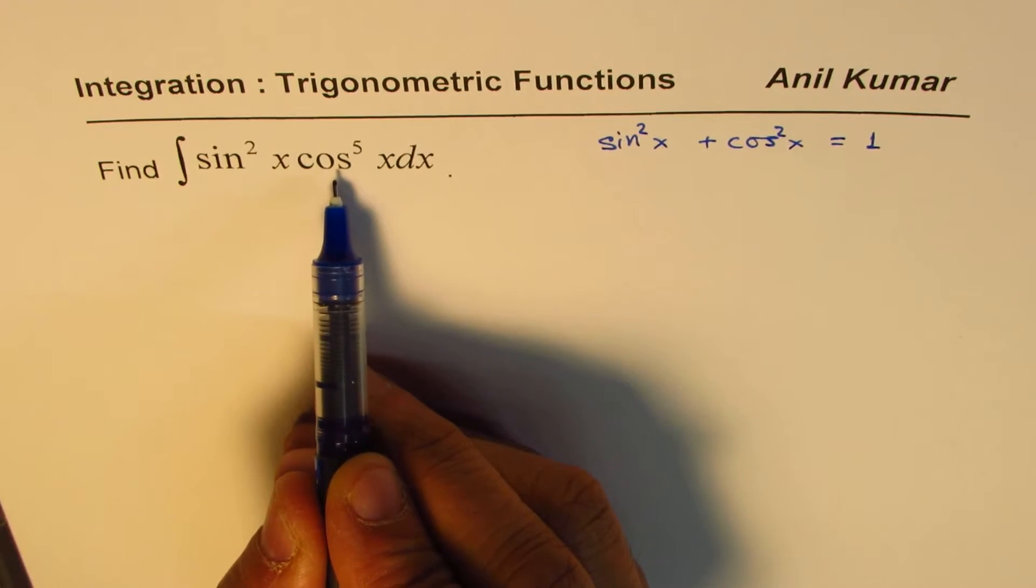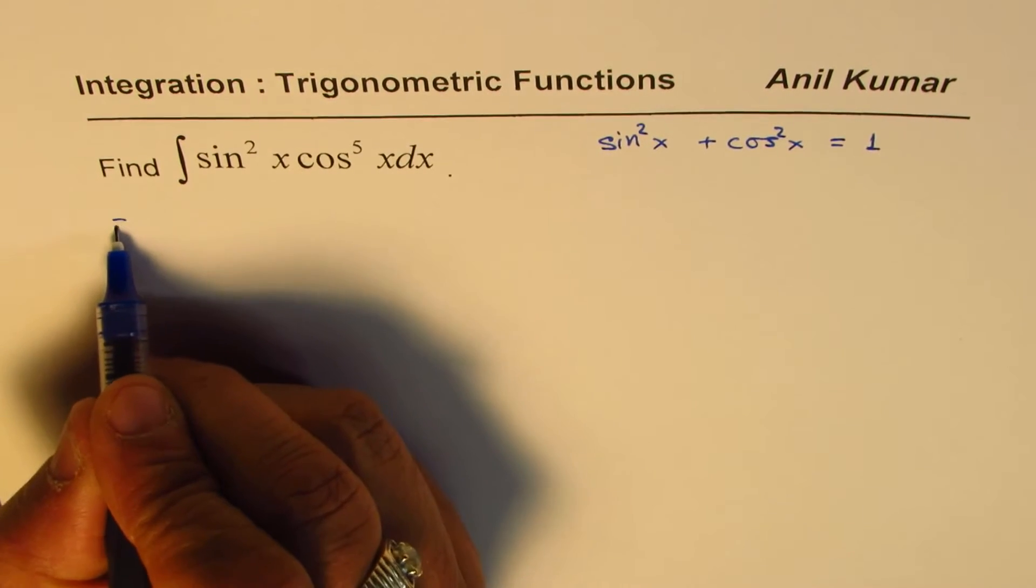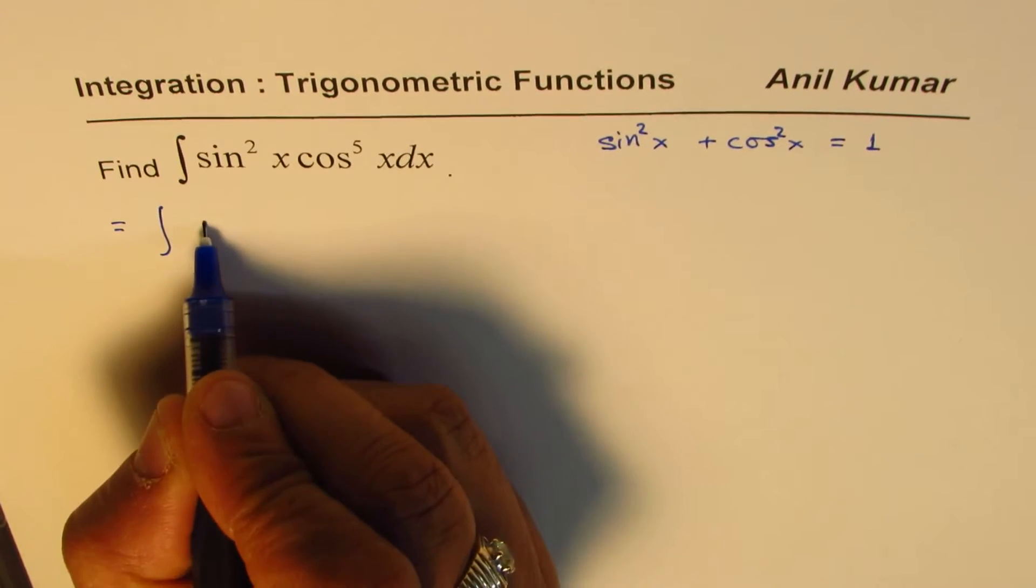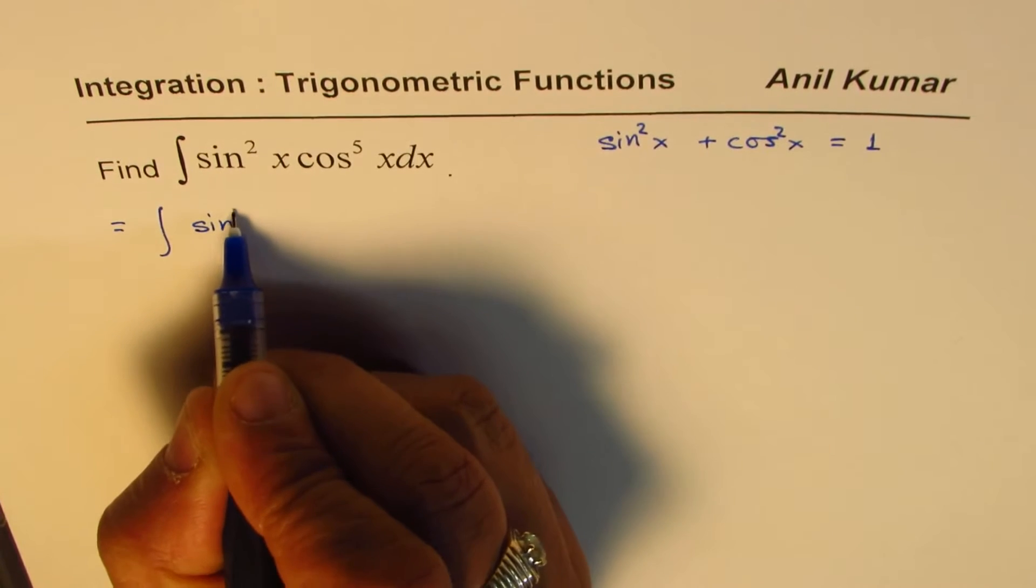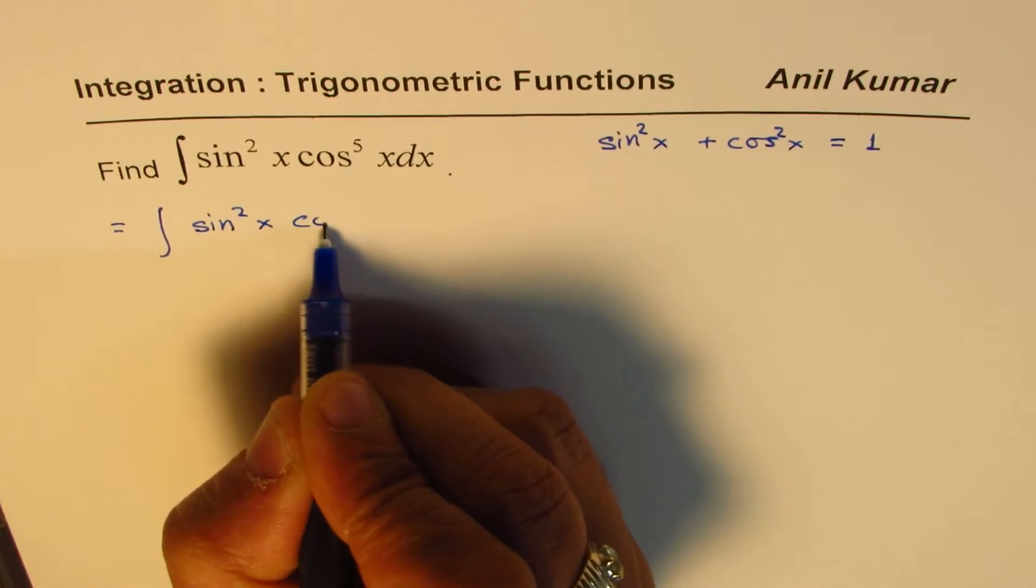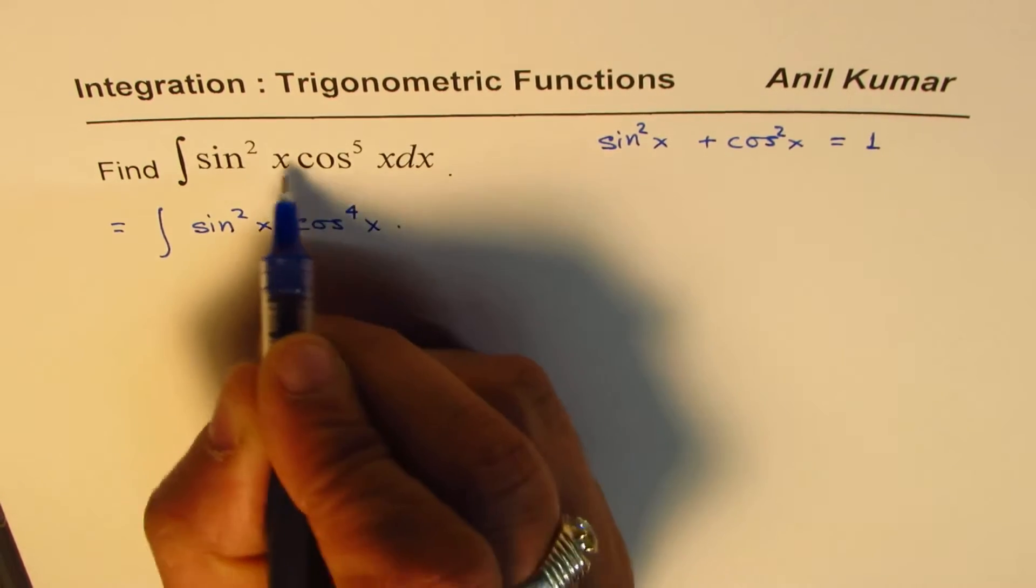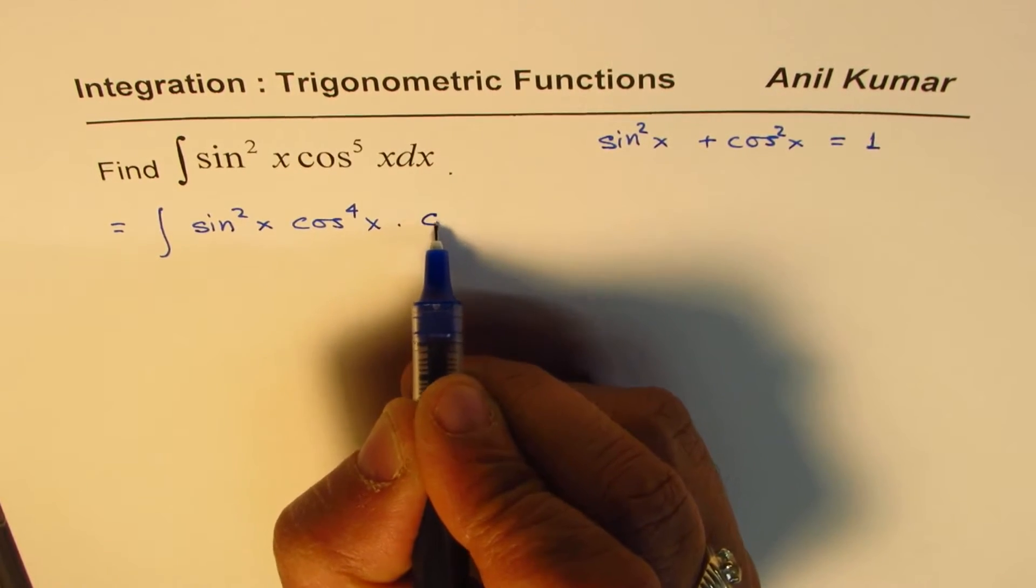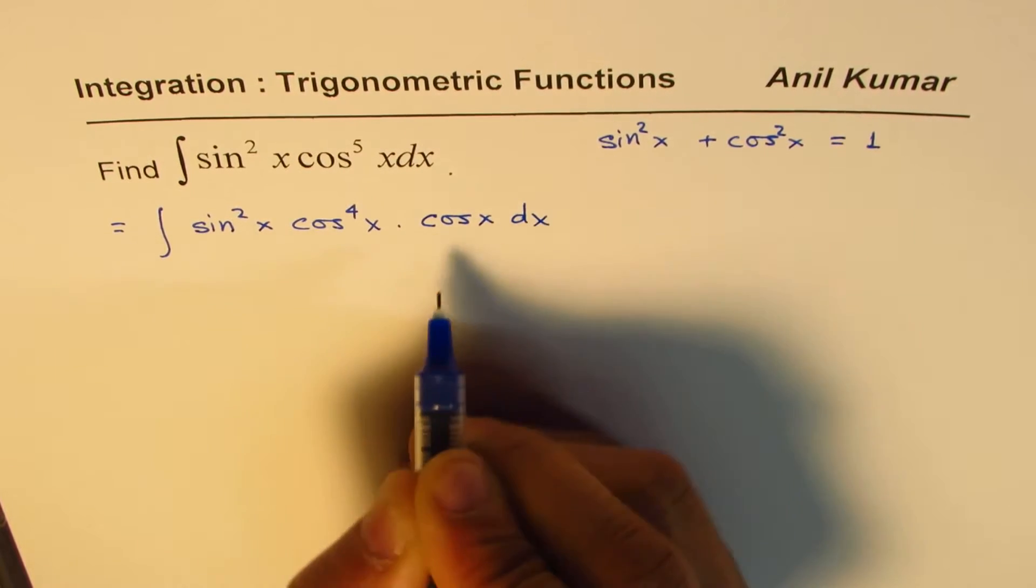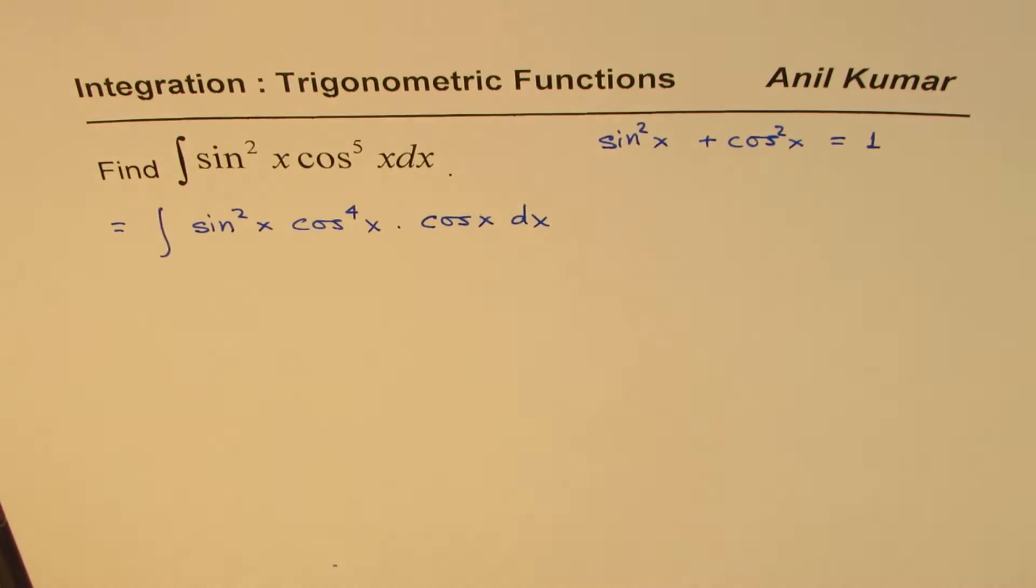So our first step will be here to write this as squares, sine square x cos to the power of 4x, that is the even powers, and keep the odd aside. So we have cos x dx.